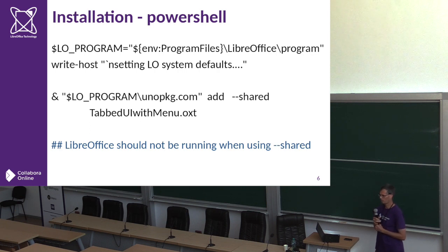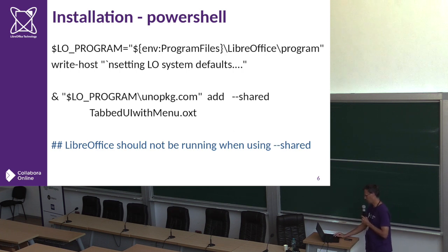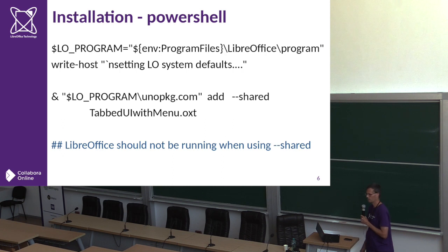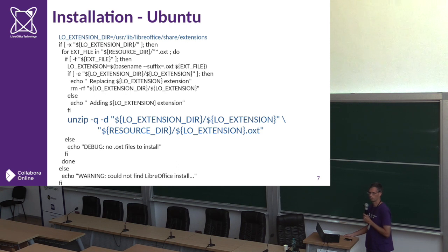It's fairly simple to create one of these extensions. I talked about installing everything automatically with PowerShell, so I've copied the relevant part for extensions. The UNO package command is what you use to programmatically add an extension — if you make it shared, it will apply for all users. Here's the same thing for a Debian-based system. You can use the same UNO package command available on Windows — it's also available for Linux. Alternatively, you can simply unzip the extension into the Debian distributions' usr/lib/libreoffice/share/extensions folder.